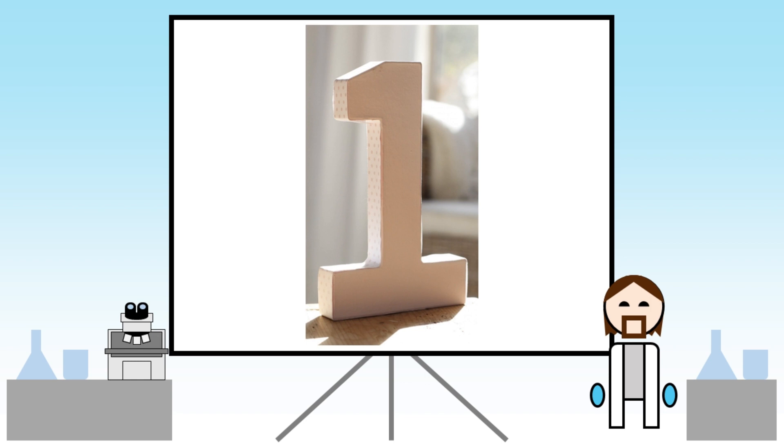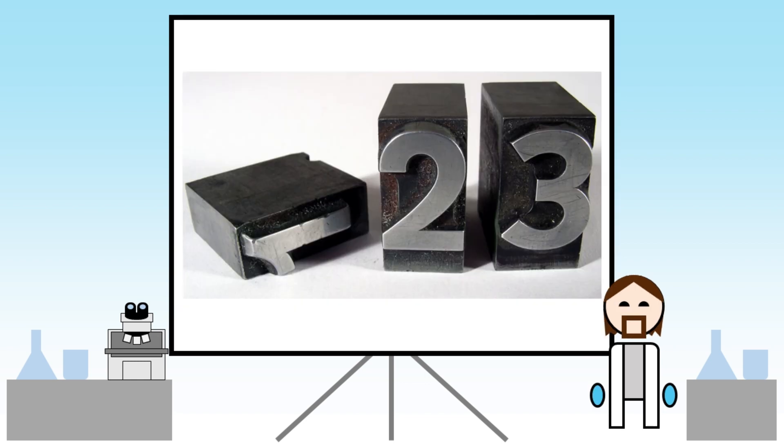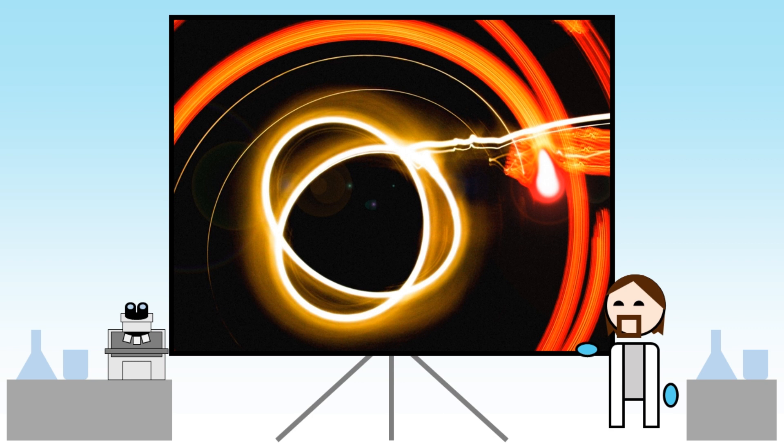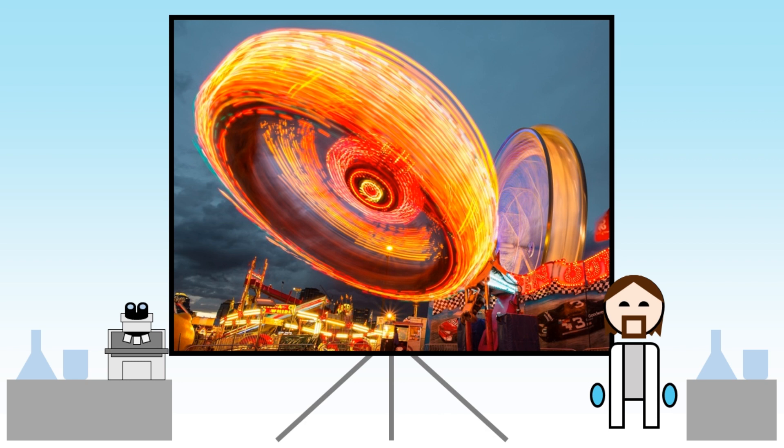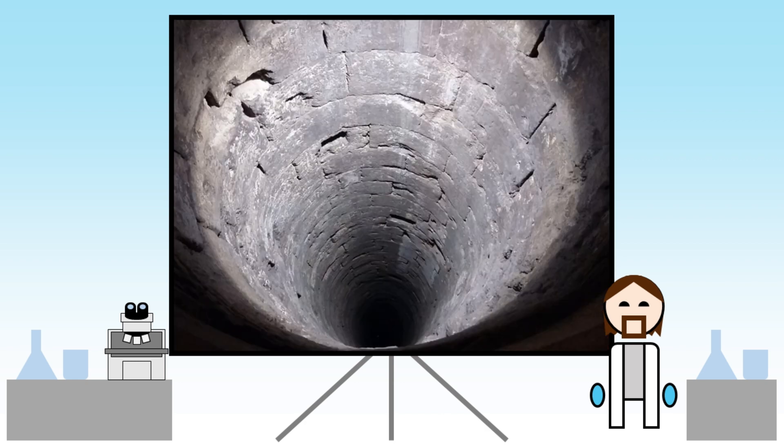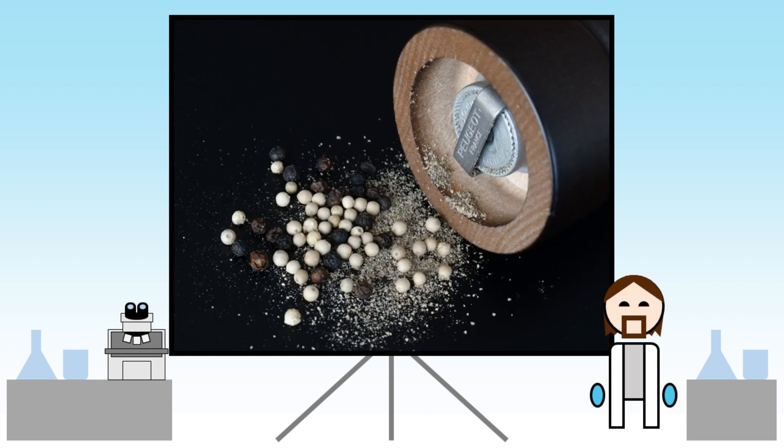The first thing to understand is how energy is stored in a molecule. There are three main ways: the energy of the electrons whizzing around the atoms, the vibrations of the bonds between atoms, and the rotation of the molecule as a whole. The lowest energy state, where all of the electrons have the least energy possible and the molecule isn't vibrating or spinning at all, is known as the ground state.